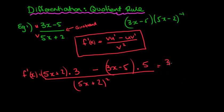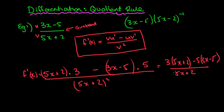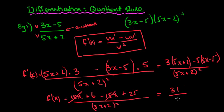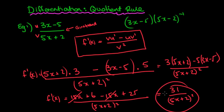All over v squared, so (5x + 2) all squared. Simplifying: 3(5x + 2) - 5(3x - 5), all over (5x + 2)². Expanding: 15x + 6 - 15x + 25, all over (5x + 2)². The 15x terms cancel, leaving 31 / (5x + 2)², and we can leave that as our answer.